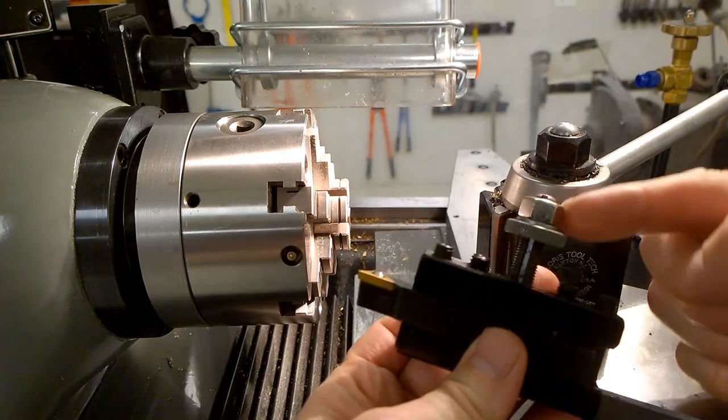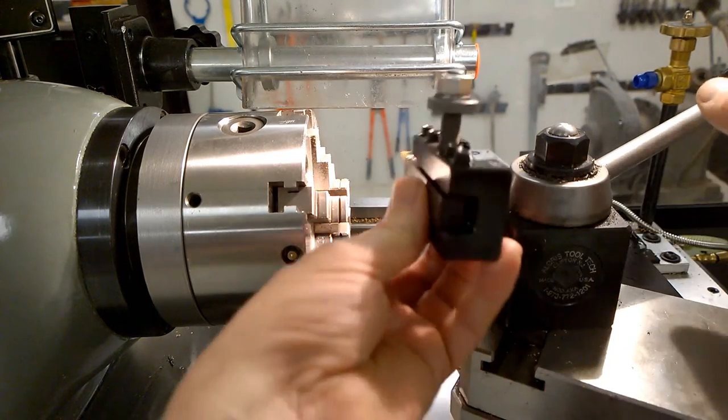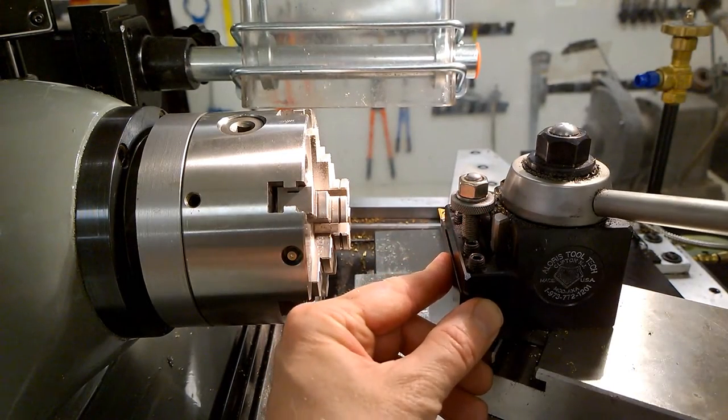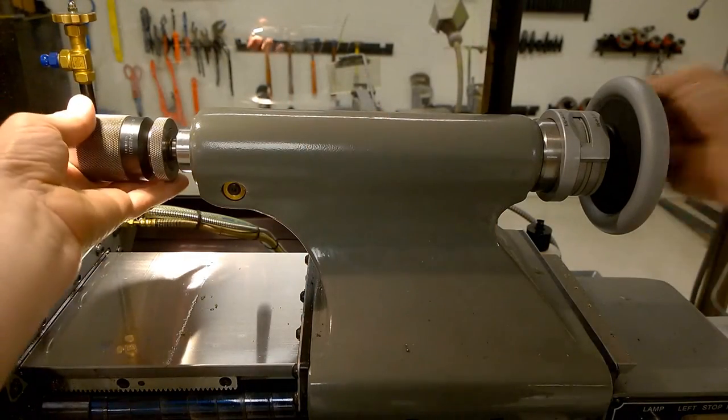The knurled nut and hex nut are used to adjust the height of the cutter. The tool holder is held securely onto the tool post with a cam lock. I am exchanging the drill chuck for the center.